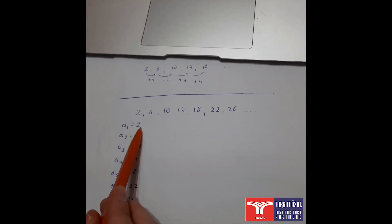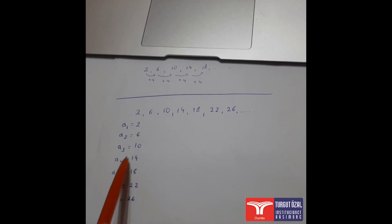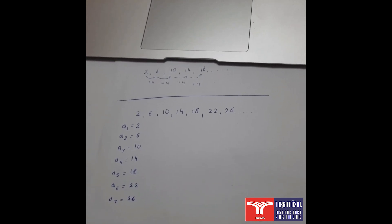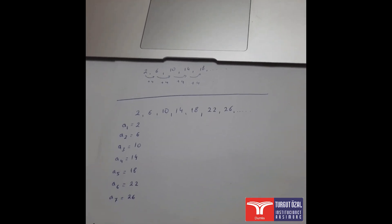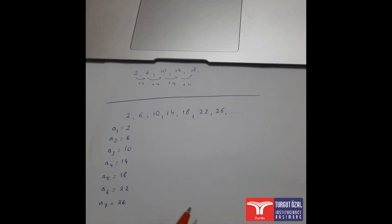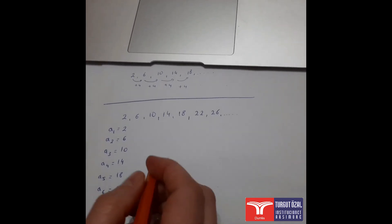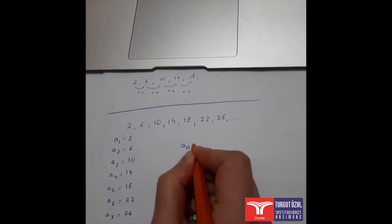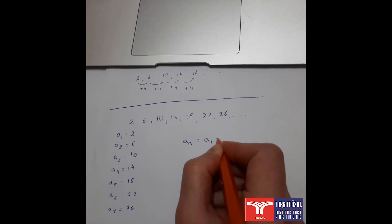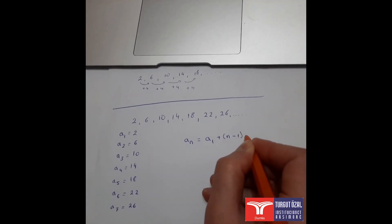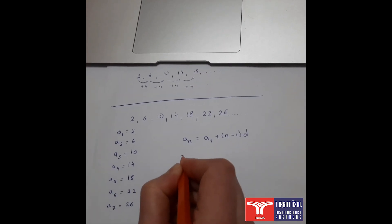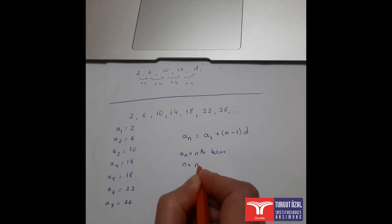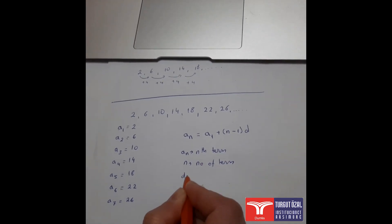So the first term is 2, the second is 6, the third is 10, the fourth is 14, and so on. If I ask you what is the hundredth term, it is difficult to continue listing terms. That's why we need a general formula. To find the nth term, we use: an = a1 + (n − 1) × d, where an is the nth term, n is the number of the term, and d is the common difference.